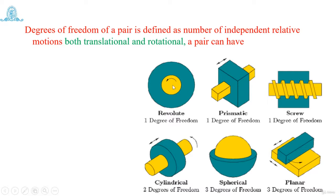How is the DOF of 1 obtained? As per the definition of degrees of freedom for a pair — the number of independent relative motions both translation and rotational — is translation possible in a revolute pair? No. Is rotational motion possible? Yes — only rotation along the axis of the shaft. That is why the degrees of freedom for a revolute pair is one.